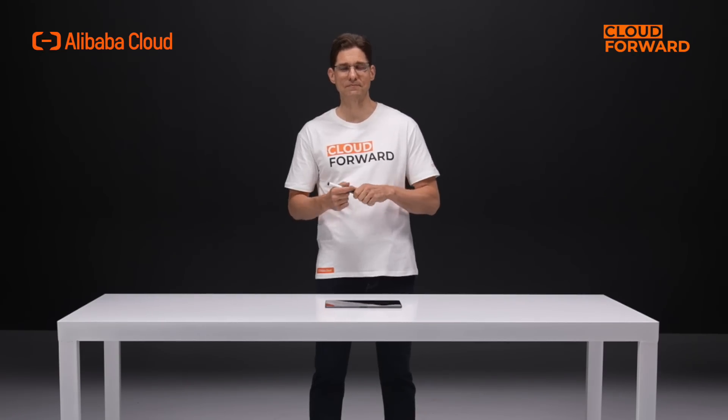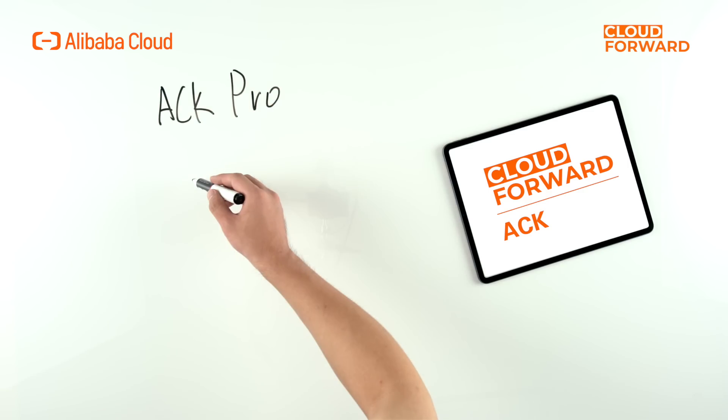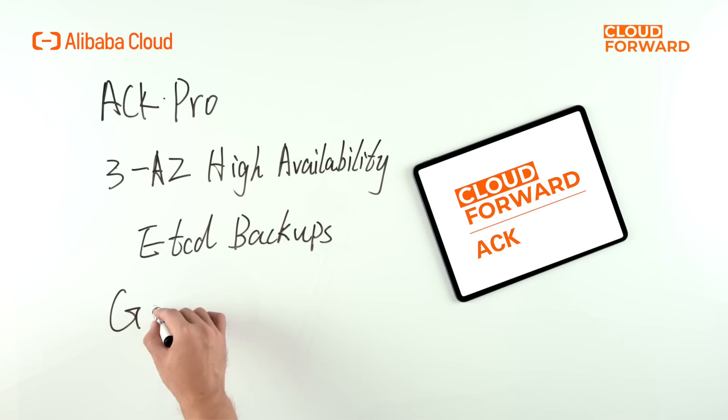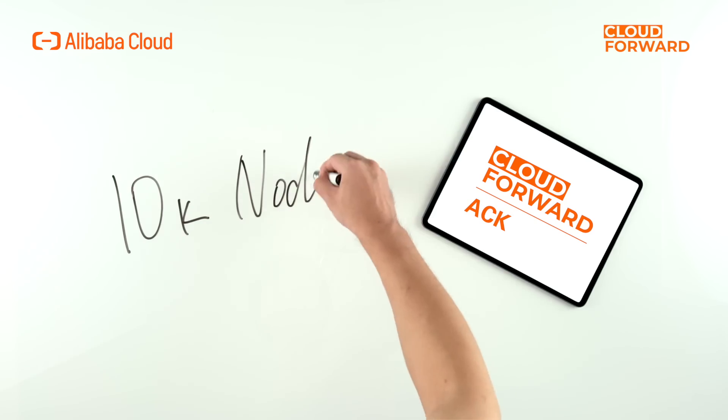The first thing we're going to talk about is large-scale high availability. ACK is one of the first container services to pass the Kubernetes conformance certification tests globally. For enterprise-level large-scale production scenarios, ACK takes one step further on reliability and security, and it provides SLA-reimbursable Kubernetes clusters. For enterprise users, we introduced ACK Pro that offers even more reliability in its control plane, supporting 3AZ high availability, and etcd backups and geo-disaster recovery. ACK Pro supports automatic scaling of control plane components, such as API server, with up to 10,000 nodes.